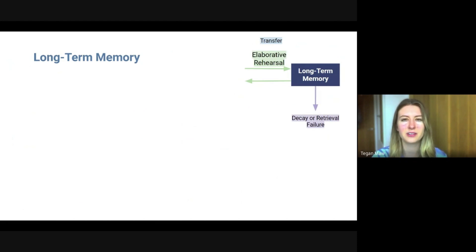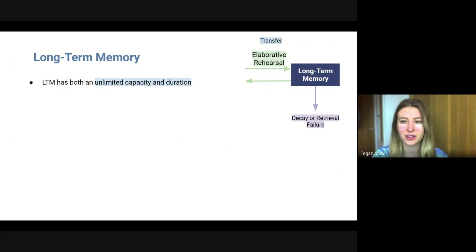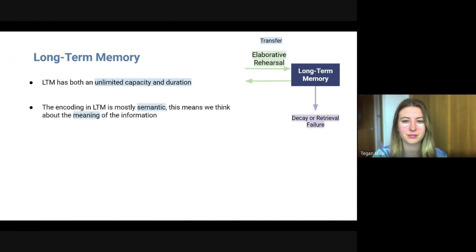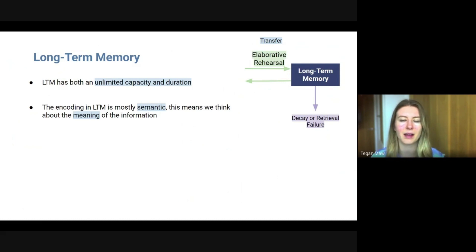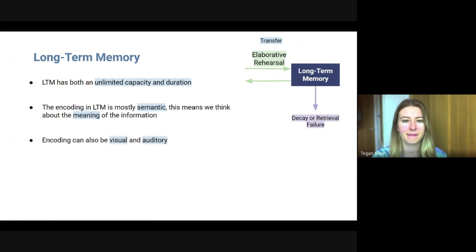Moving on to long-term memory: it has both an unlimited capacity and duration, so in theory we could have unlimited amounts of information in your brain for as long as you live. The encoding for long-term memory is mostly semantic — thinking about meaning, which comes from elaborative rehearsal. Encoding can also be visual and auditory for long-term memory.